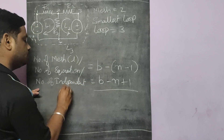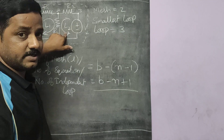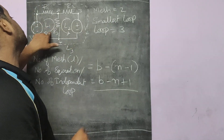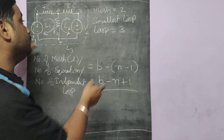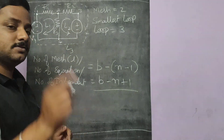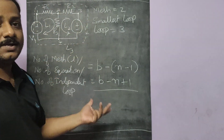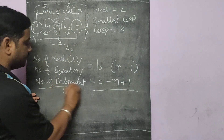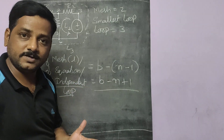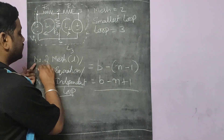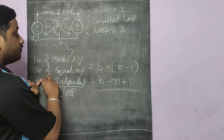L1 and L2 are independent loops, but L3 is not independent because it contains two loops inside it, so L3 cannot be considered an independent loop. Use this formula to find the number of independent loops, the number of meshes, or the number of equations in a network.